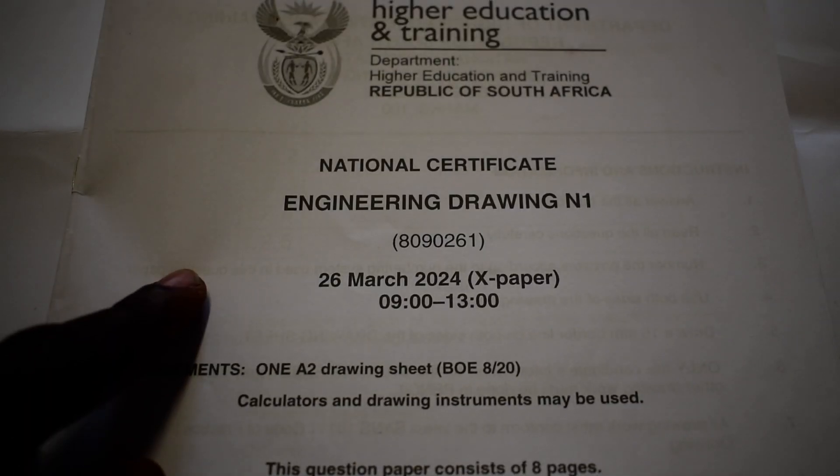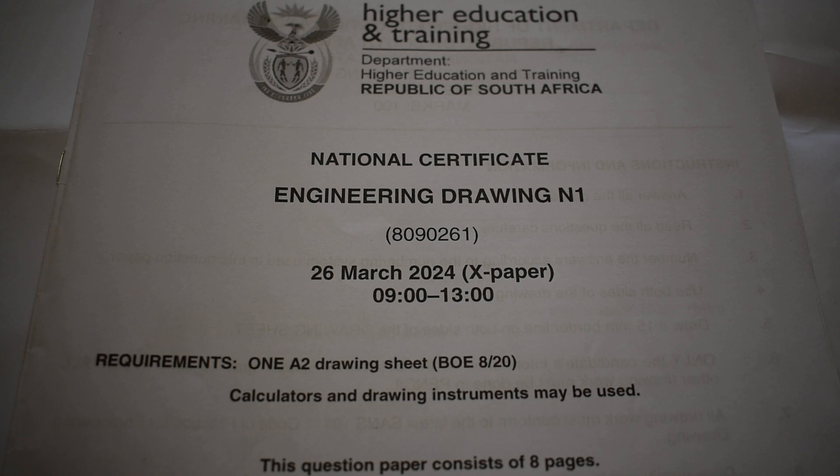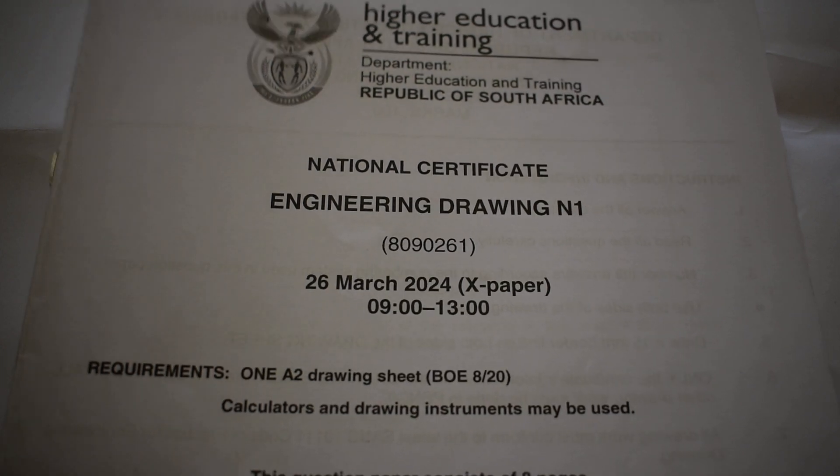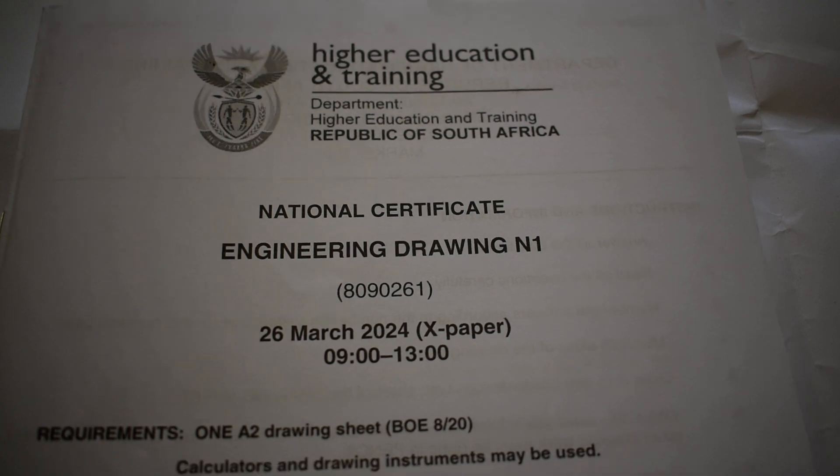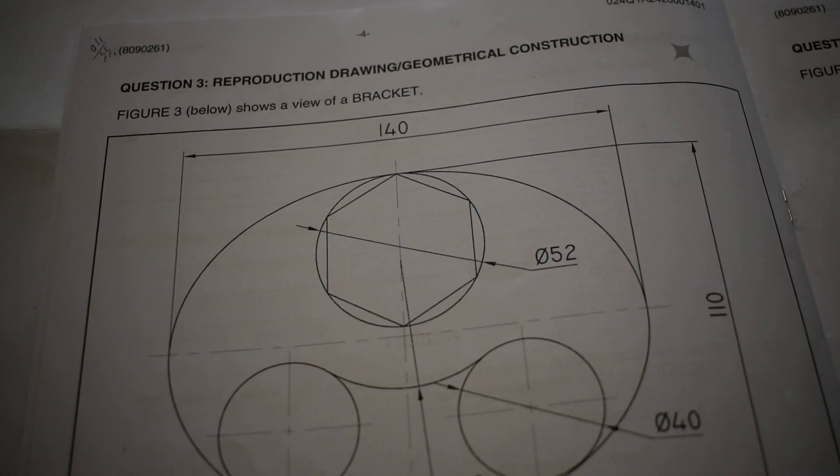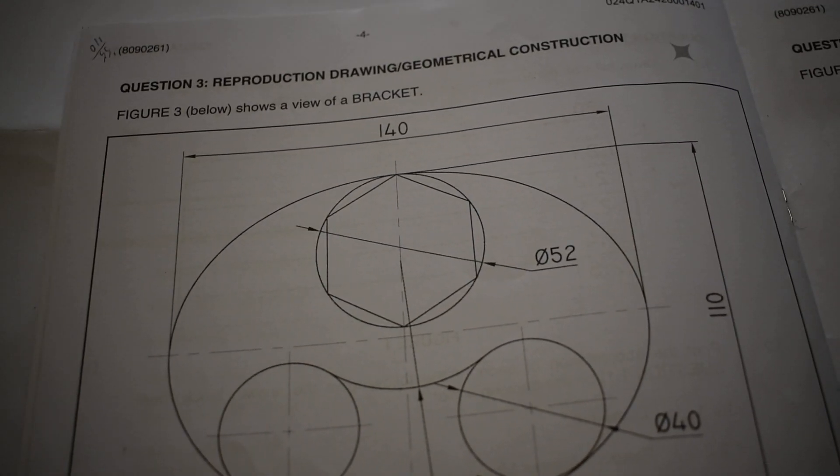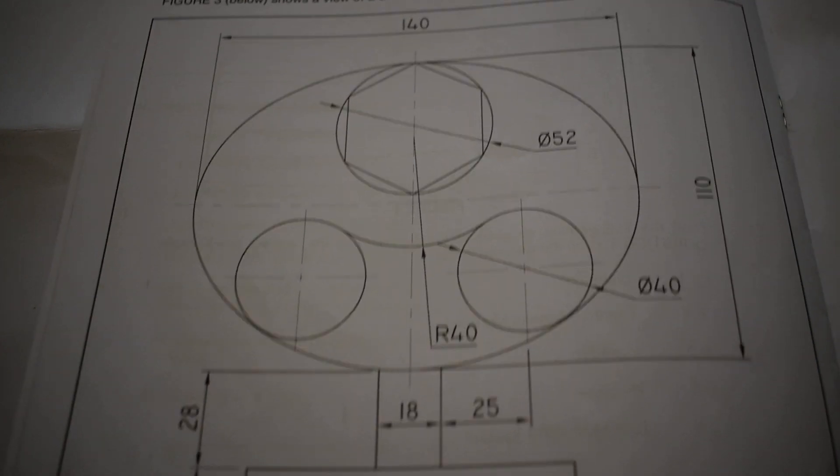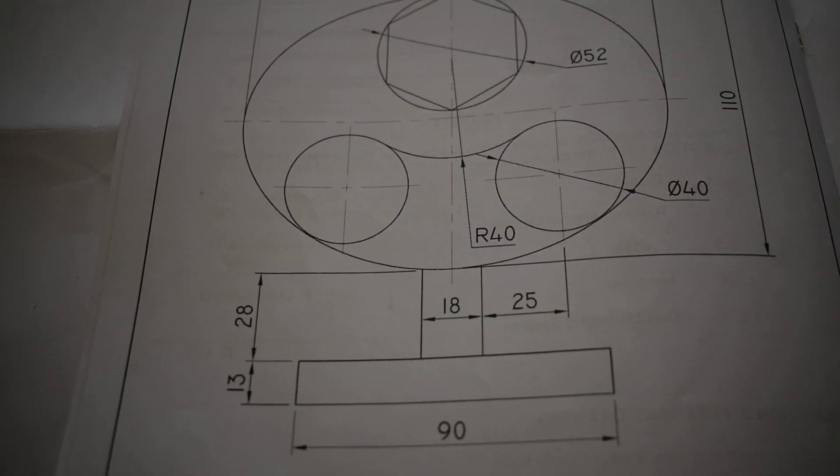Alright guys, I want us to look at a 26 March 2024 engineering drawing N1. Let us just remind each other. I want us to look at question three, which is reproduction drawing geometrical construction. Figure three below shows a view of a bracket, so this is a bracket. I hope you can see it clearly.